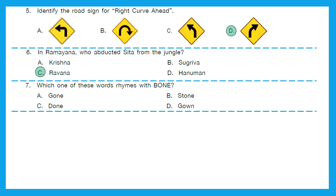Question 7: Which one of these words rhymes with bone? Is it gone, stone, done or gown? The right answer is option B, stone — bone, stone.